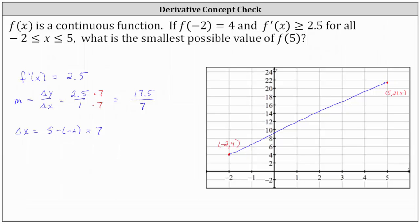Not only that, the point 5 comma 21.5 tells us that f of 5 is equal to 21.5. And this would be the smallest possible, or least possible, value of f of 5, given that we used the least possible derivative function value of 2.5. So now we know the least possible value of f of 5 is 21.5.